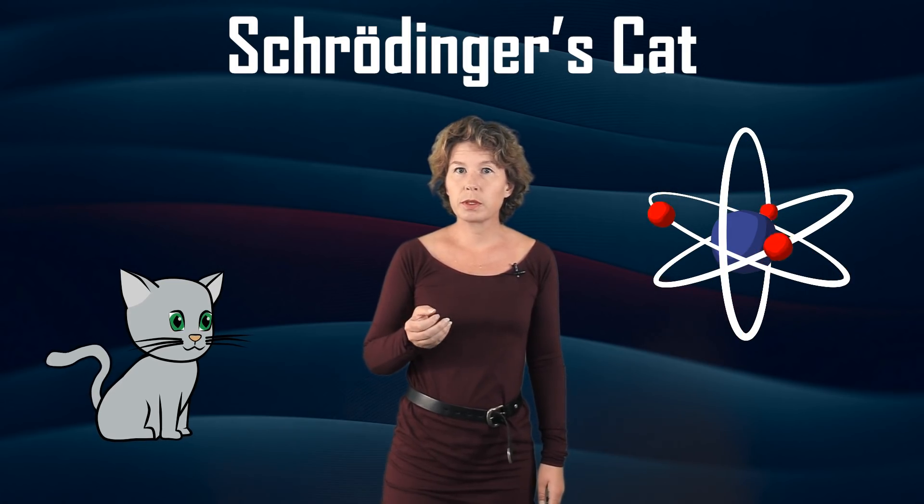Erwin Schrödinger's thought experiment with the cat demonstrates that quantum effects for single particles can have macroscopic consequences. Schrödinger said, let us take a single atom which can undergo nuclear decay. Nuclear decay is a real quantum effect. You cannot predict just exactly when it happens, you can only say it happens with a certain probability in a certain amount of time.